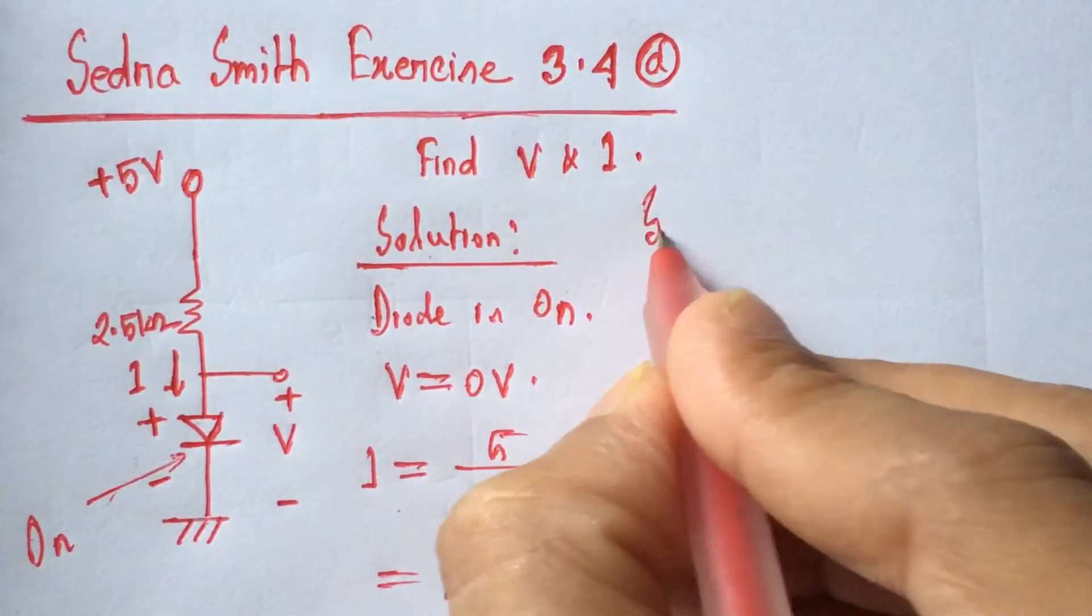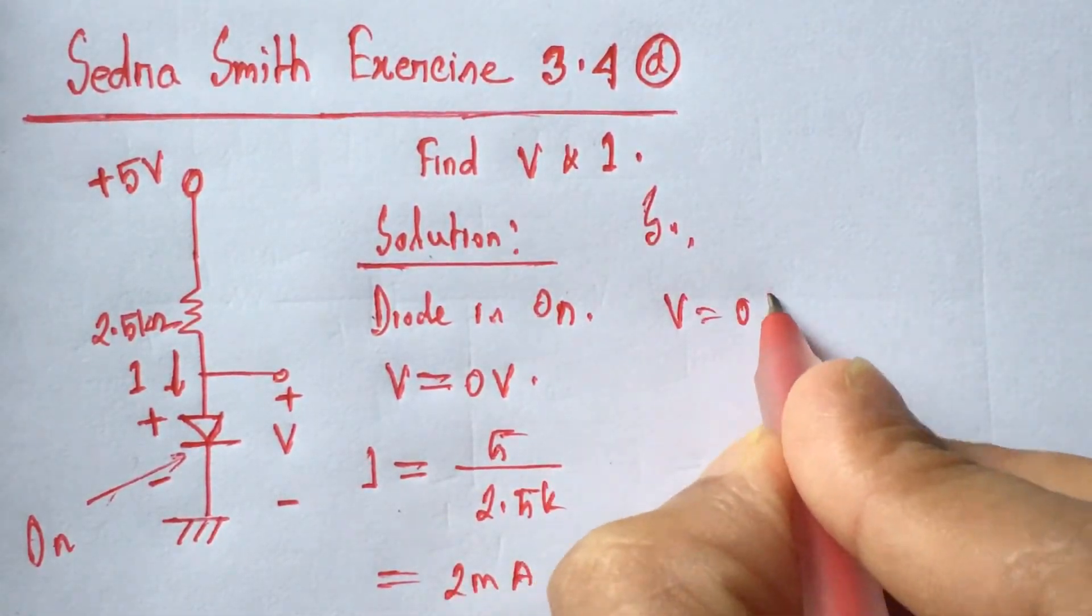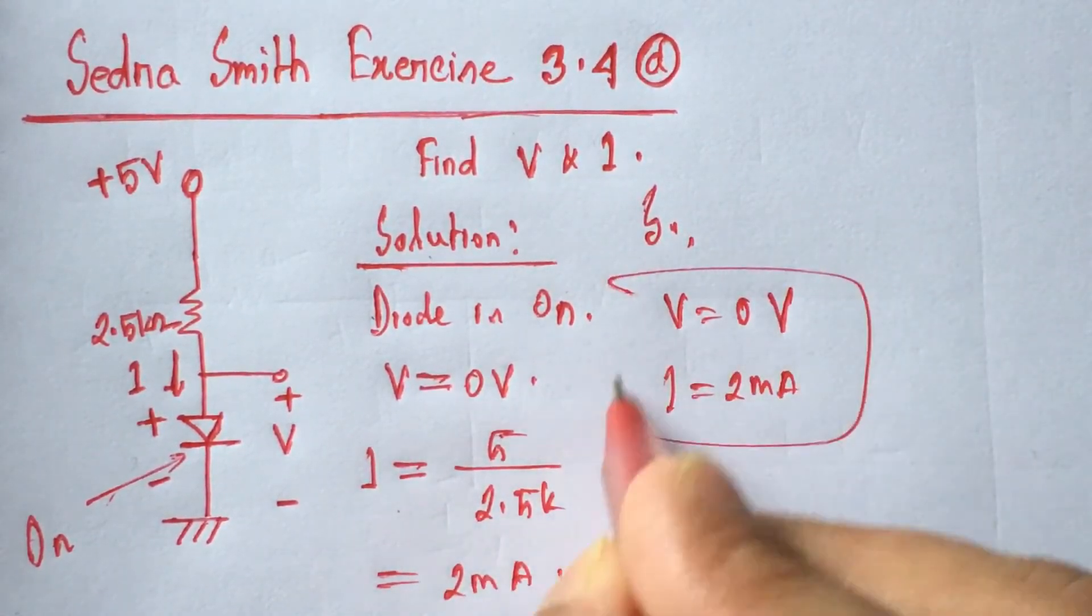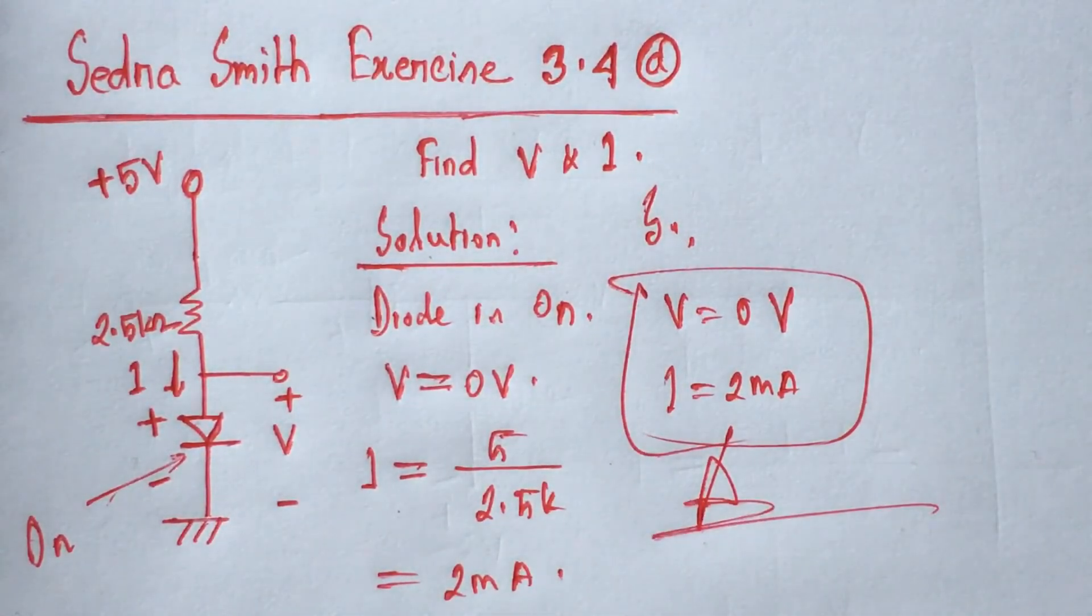So V equals 0 volts, I equals 2 milliamperes. This is the answer. Thank you for watching.